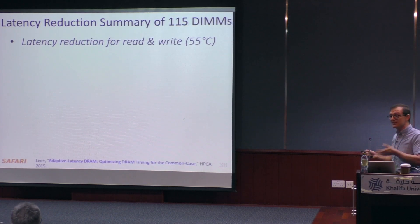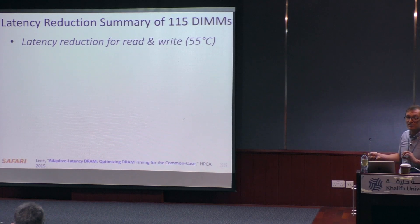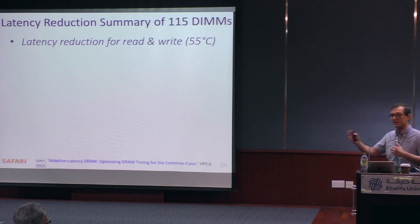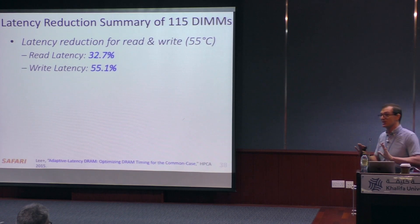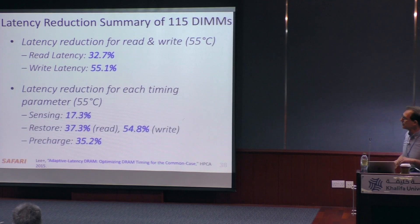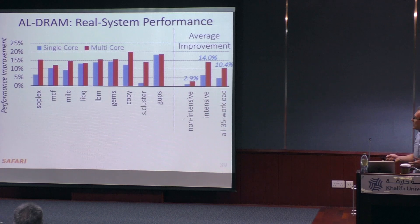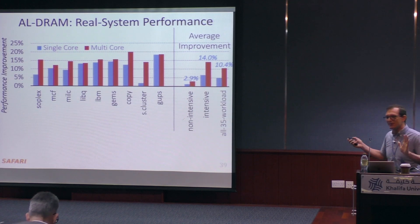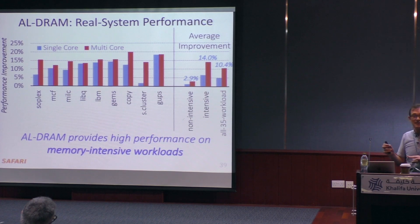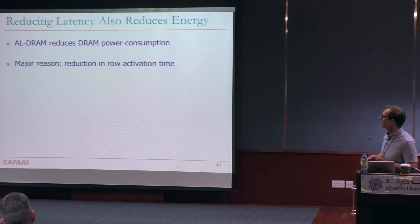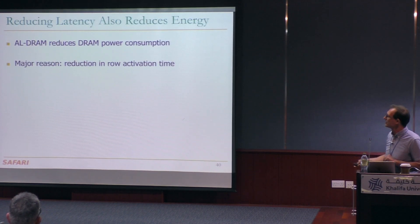Using this infrastructure, we analyzed 115 DIMMs — almost a thousand chips. The reliable latency reduction at 55 degrees Celsius, which is lower than the 85 or 95 degrees Celsius worst-case the standard supports, is significant. You can reduce read latency by about 30% and write latency by about 55%, without doing a whole lot of work and without significantly changing the architecture. The impact on real systems is significant: on memory-intensive applications we get about 14% performance improvement across multiple applications. We don't even change anything in the system — we just adjust the timing parameters to values we know are good for that operating mode.